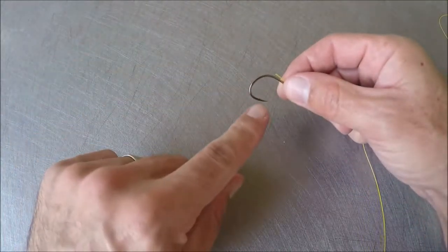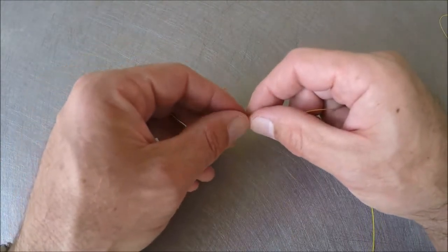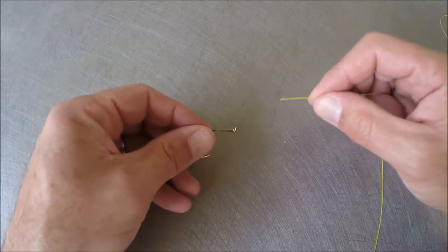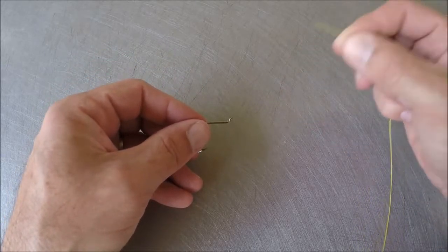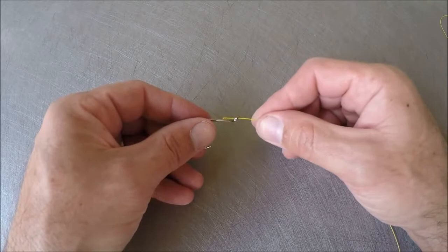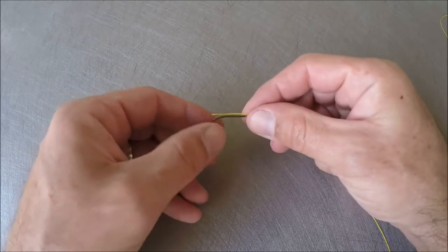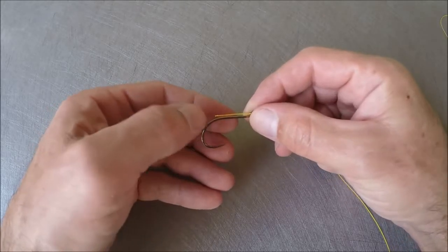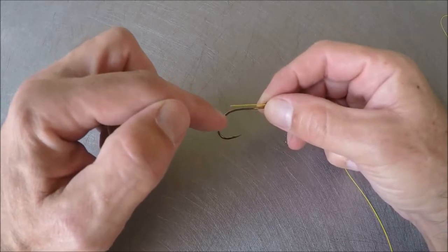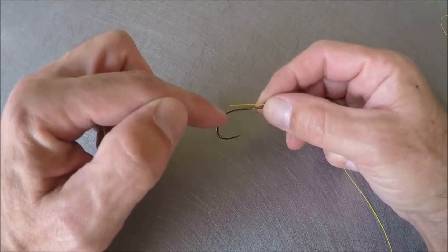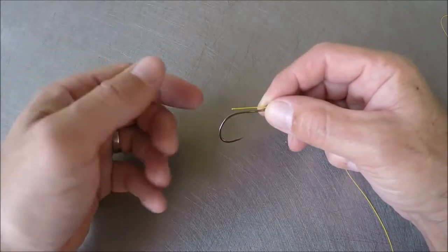I've got my hook, I've already pinched the barb down using a pair of needle nose pliers so it's barbless, and I'm gonna simply pass the line through the eye of the hook just like that. I want my tag end to go about where the bend of the hook starts right there.